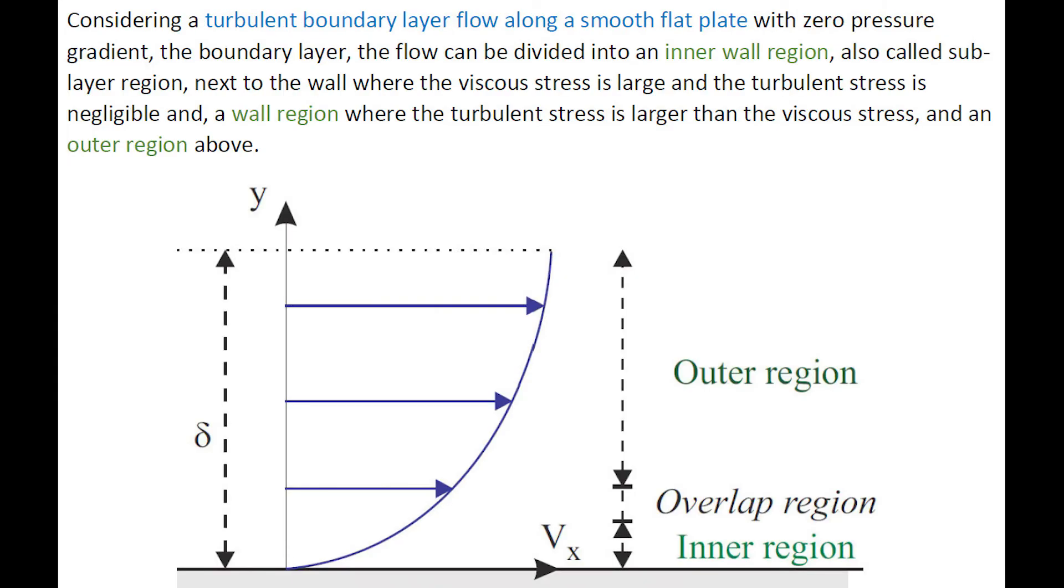Now, considering a turbulent boundary layer along a smooth flat plate, the boundary layer can be divided into three flow regions: an inner wall region, a wall region, and an outer region.